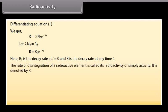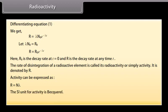The rate of disintegration of a radioactive element is called its radioactivity or simply activity. It is denoted by R. Activity can be expressed as R is equal to N lambda. The SI unit for activity is Becquerel. 1 Becquerel is equal to 1 Bq is equal to 1 decay per second.